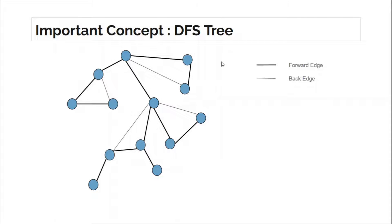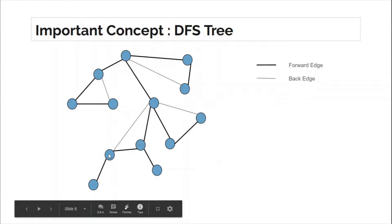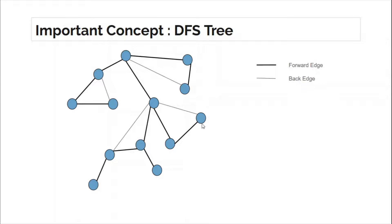Now we have this DFS tree. An important observation regarding this DFS tree and bridges is that a back edge connects a node to its ancestor — an ancestor which is not its direct parent. Every single back edge connects a descendant to its ancestor, at least a grandparent or above.